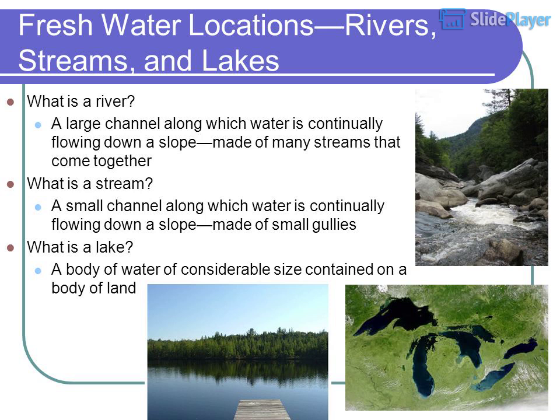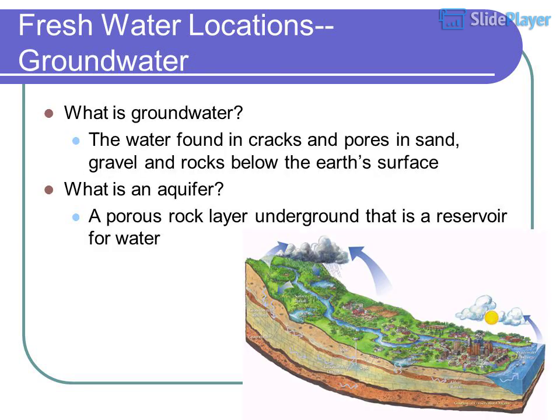What is a river? A large channel along which water is continually flowing down a slope, made of many streams that come together. What is a stream? A small channel along which water is continually flowing down a slope, made of small gullies. What is a lake? A body of water of considerable size contained on a body of land.